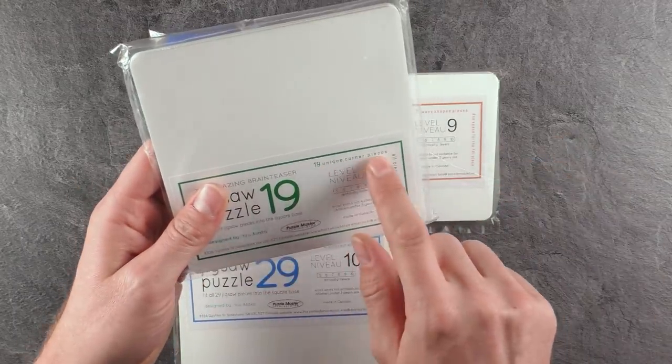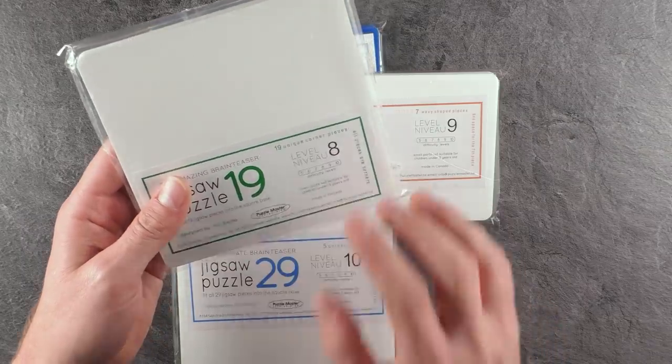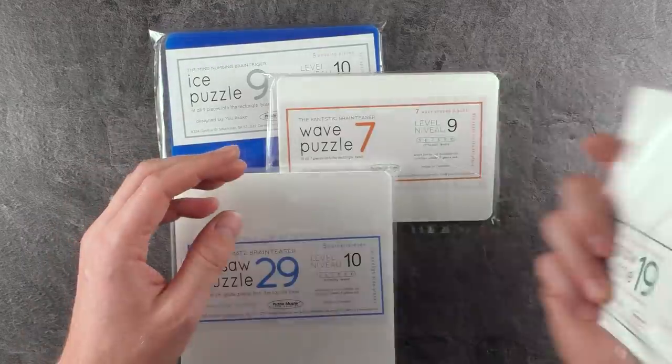This one, for example, is made out of 19 unique corner pieces, which sounds really interesting, if you ask me. It's a level 8.